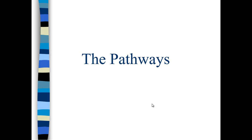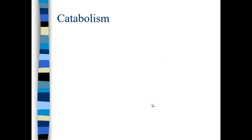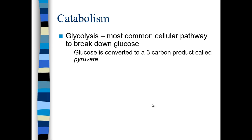Now we talk about the different catabolic pathways. The primary catabolic pathway to break down glucose is glycolysis — the most common cellular pathway. Glucose is converted to a three-carbon product called pyruvate in the process of glycolysis.